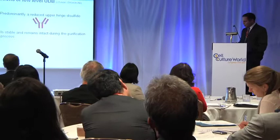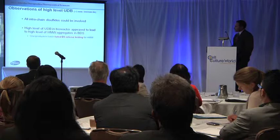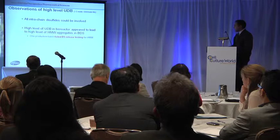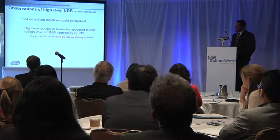The issue is not particularly problematic when we have low levels of UDB. It's predominantly a reduced upper hinge disulfide. In general, it's stable and remains intact throughout the purification process. However, at high levels of UDB, what we see is all the intra-chain disulfides could be affected. And more problematically, this high level of UDB in the bioreactor leads to high molecular weight aggregates, which is considered an impurity in our bulk drug substance.